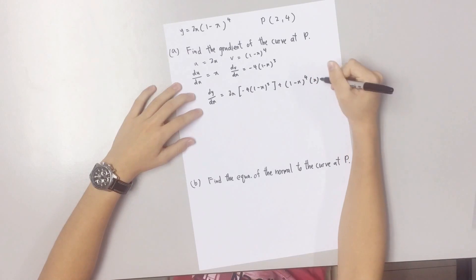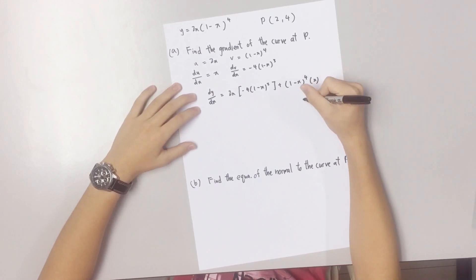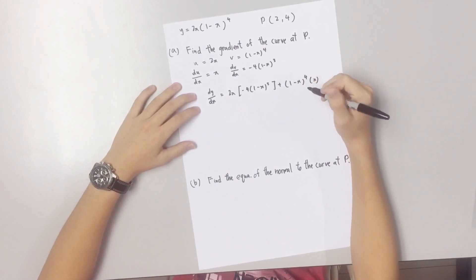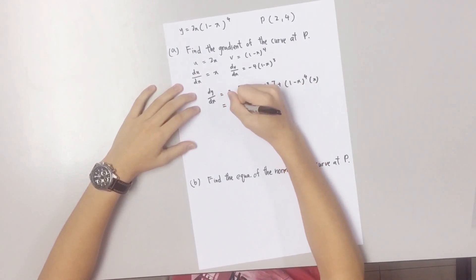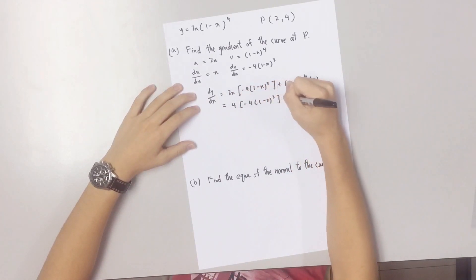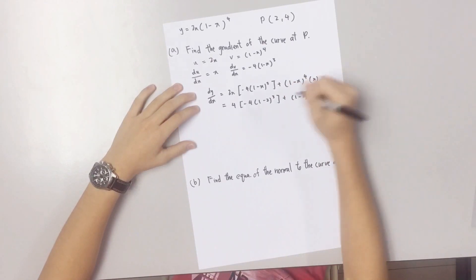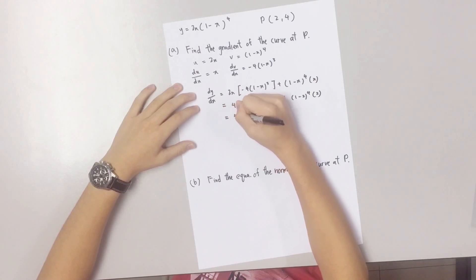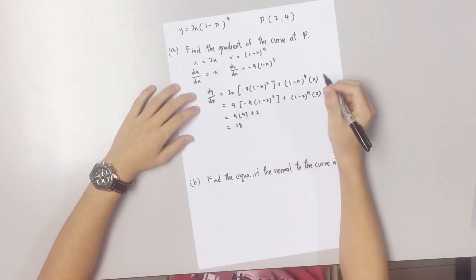This is the function. Now, you sub the x coordinates of point P into the function, and you will get the gradient of the curve at P.